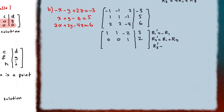To reduce row three, we take the original first row multiplied by two and add it to row three. Two times negative one plus two gives zero for x; two times negative one plus two gives zero for y; two times two plus negative four gives zero for z; and two times negative three plus six gives zero for the constant. All values in the last row equal zero.